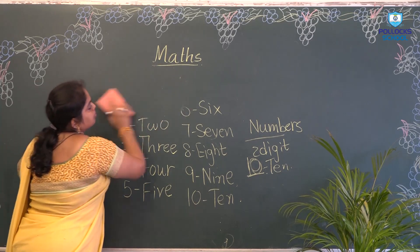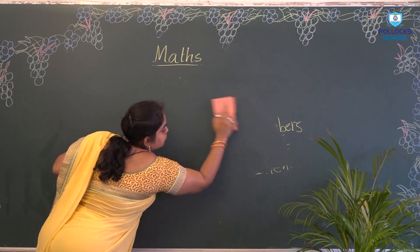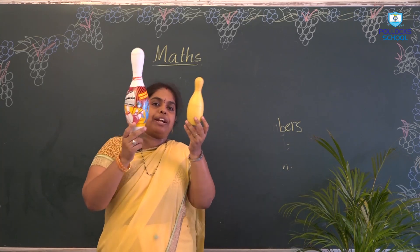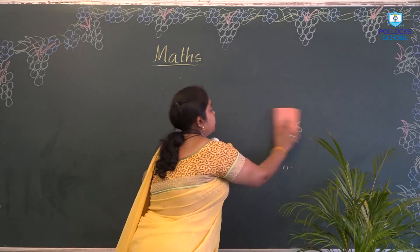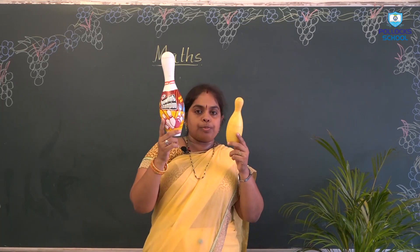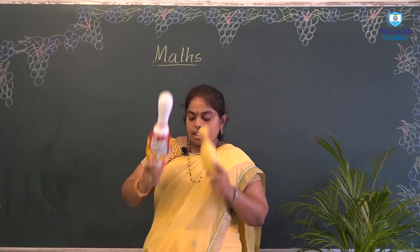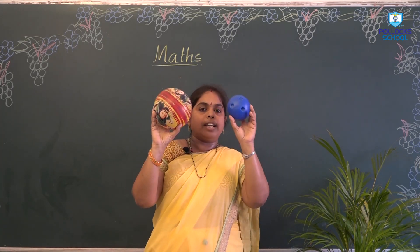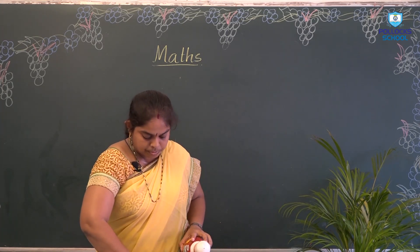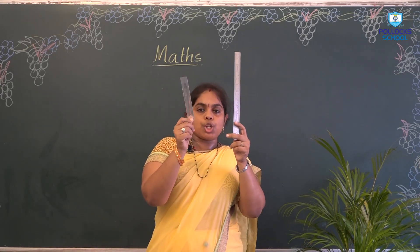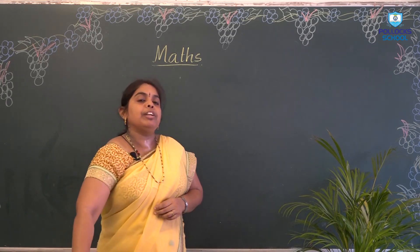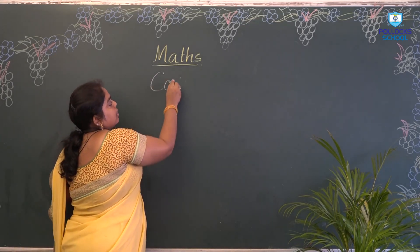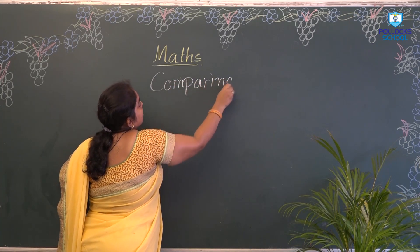Now, look at these 2 objects. If you observe them properly, we can say clearly that this object is fat and this object is thin. If you see these objects, we can say that one is big and one is small. And seeing these 2 also, this is short and this is long. We use all these topics — big, small, short, thin, fat — when we are comparing.